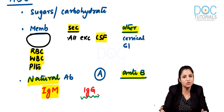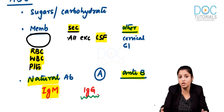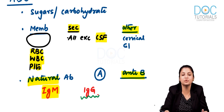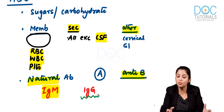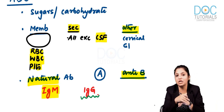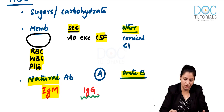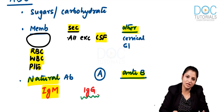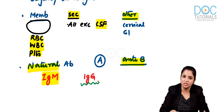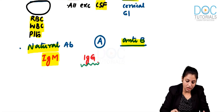Natural IgM antibodies are important in another context you may have studied — hyperacute graft rejection. The recent update states that natural IgM antibodies have a role in hyperacute graft rejections. Everyone should be clear on this point.